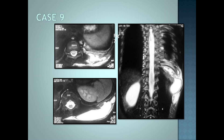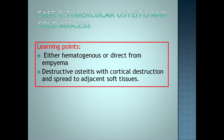The 9th case: we see there is a fluid collection in the pleural cavity tracking down into the chest wall, with involvement of the ribs and an overlying subcutaneous collection or abscess. This is better shown on coronal T2 images, where there is hyperintensity in one of the ribs, and this collection is tracking into the intercostal space and into the overlying soft tissues. This is a case of osteitis with cold abscess, which can either be hematogenous or can spread directly from the environment.